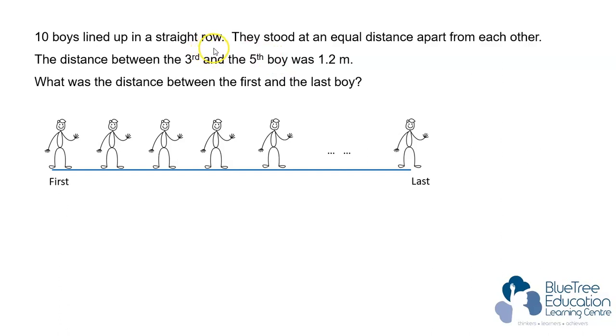Ten boys lined up in a straight row. They stood at an equal distance apart from each other. The distance between the third and the fifth boy was 1.2 meters. What was the distance between the first and the last boy?